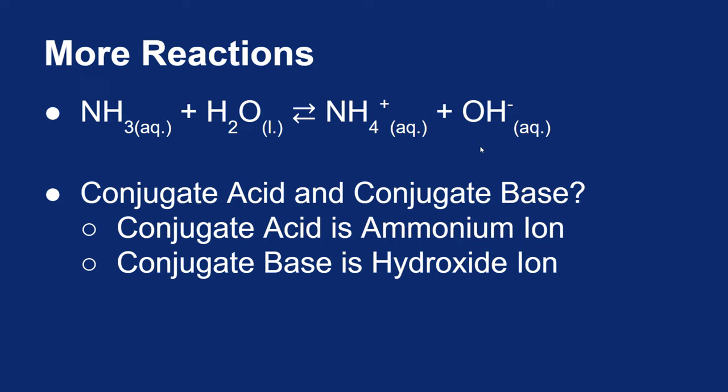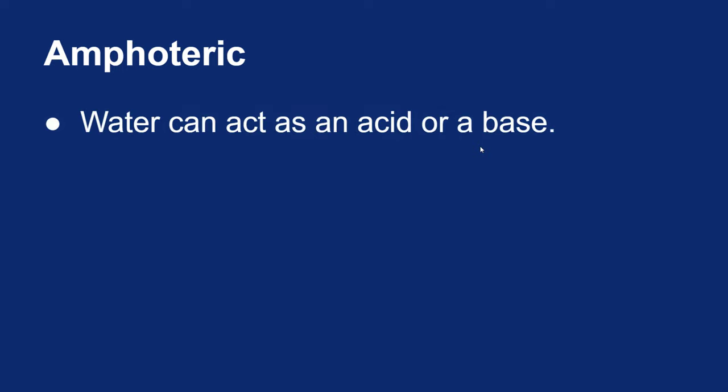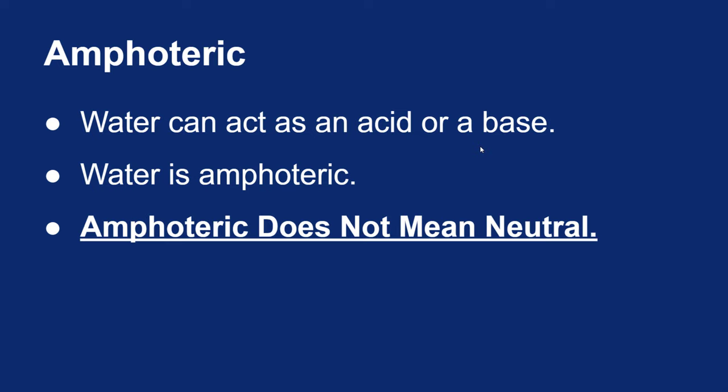Something strange just happened: we saw two reactions where water acted as an acid in the first reaction but acted as a base in the second. Water is amphoteric. The word amphoteric means something can act as an acid or as a base — it does not mean neutral. Yes, water is neutral, but that doesn't mean it's amphoteric. There are plenty of things that are amphoteric with a pH lower than 7 or higher than 7. Amphoteric simply means it can accept a proton or donate a proton.